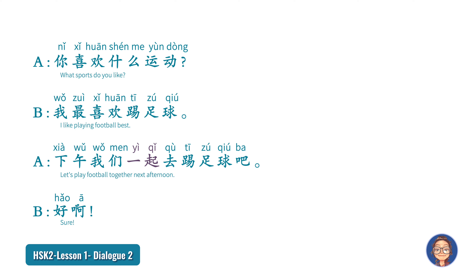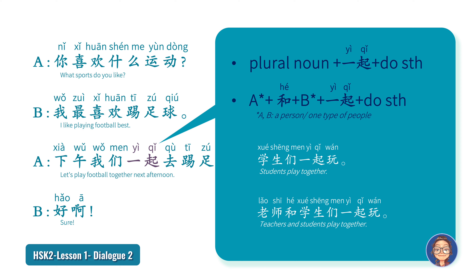我们一起去踢足球 — 'we together go play football'. Here we have two structures. When two individuals with distinct attributes do something together, we use: A 和 B 一起 do something. If a group of people share the same characteristics, we don't need 和; we use the plural form and directly say 一起 do something.